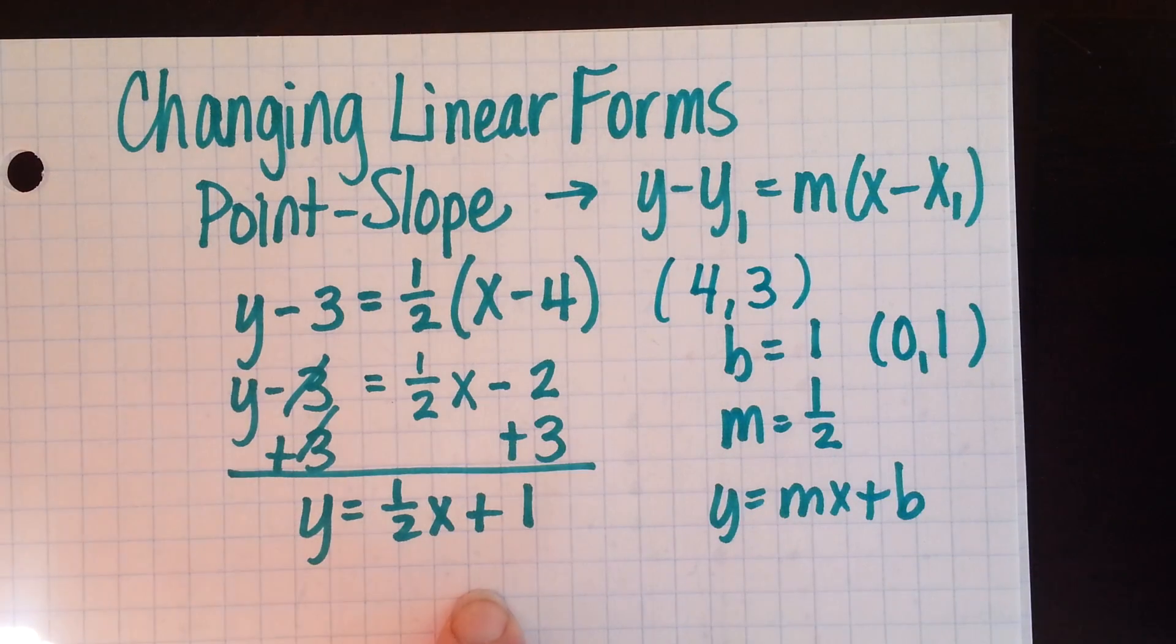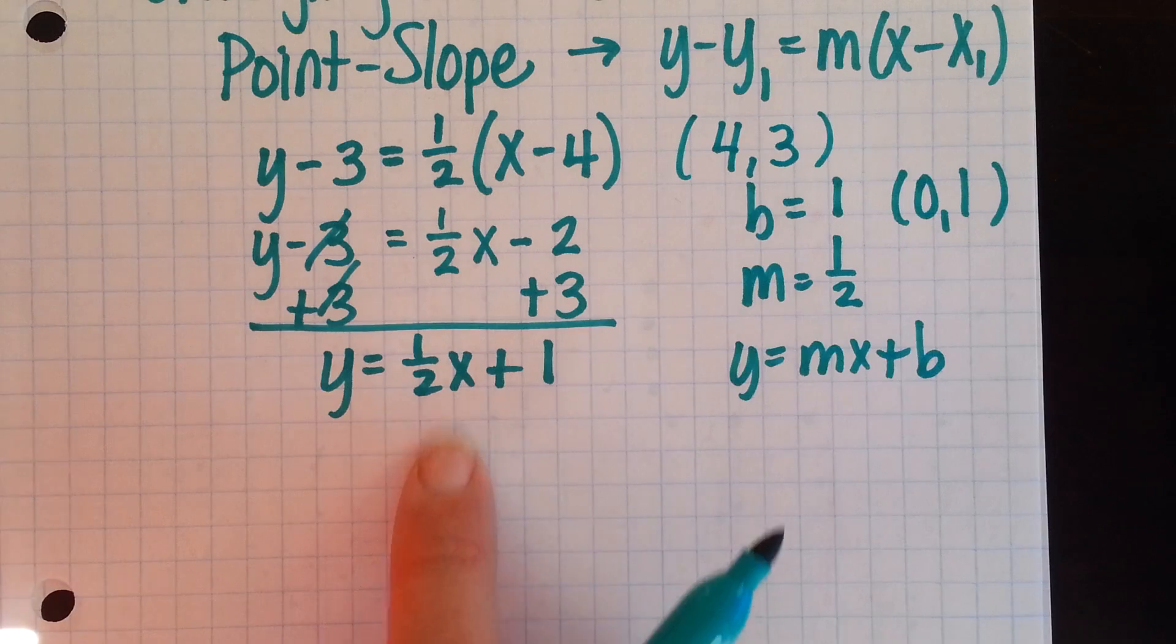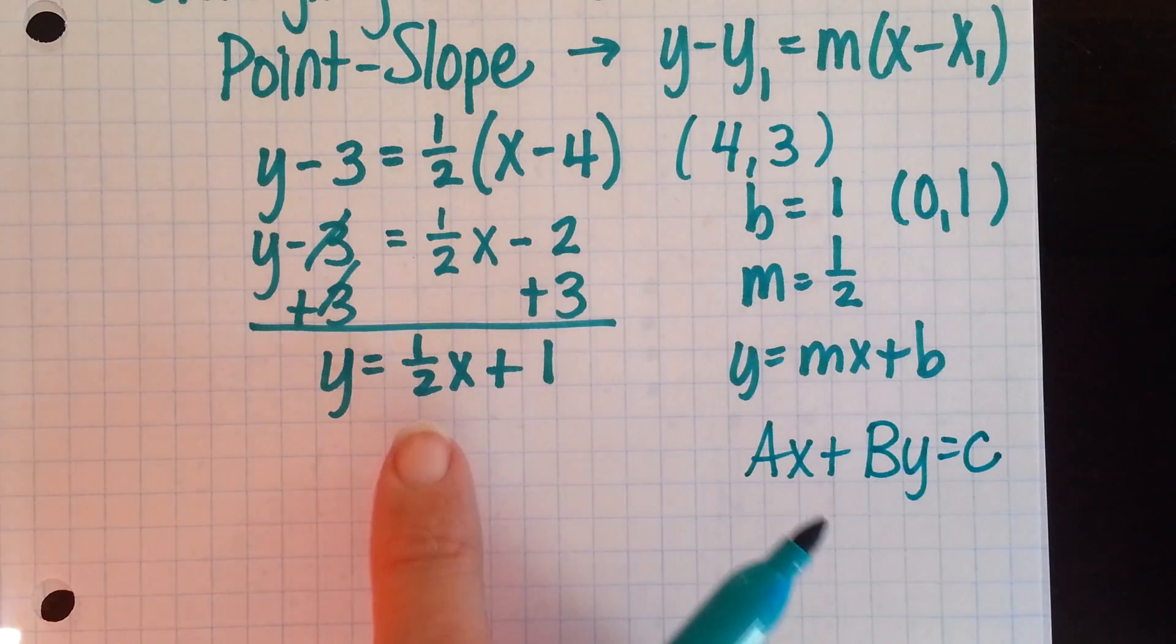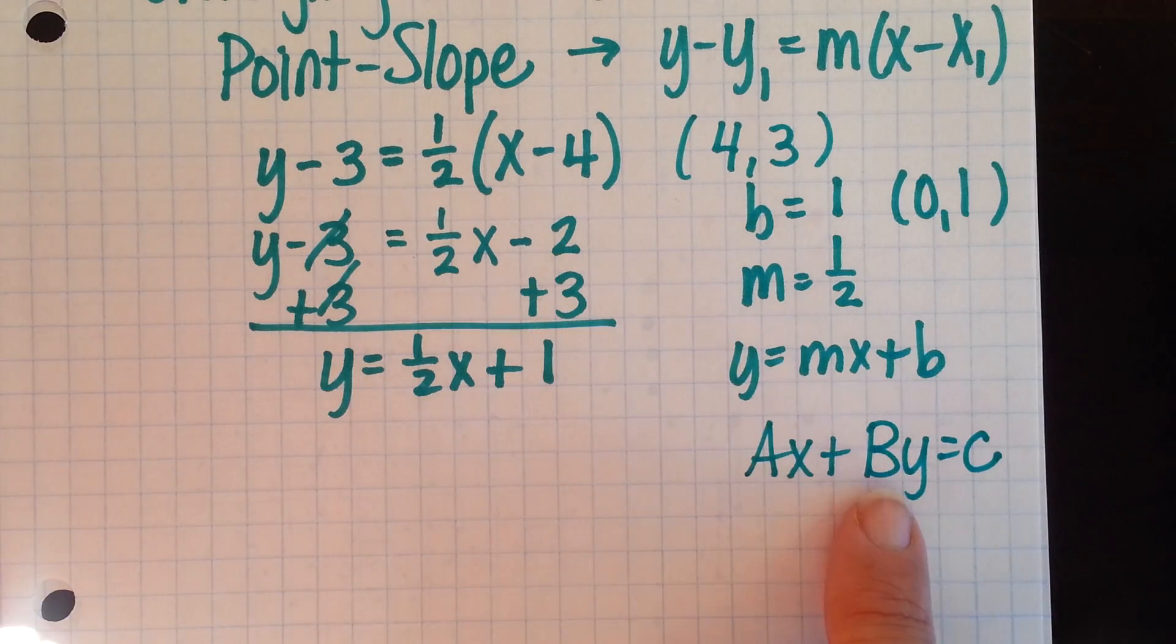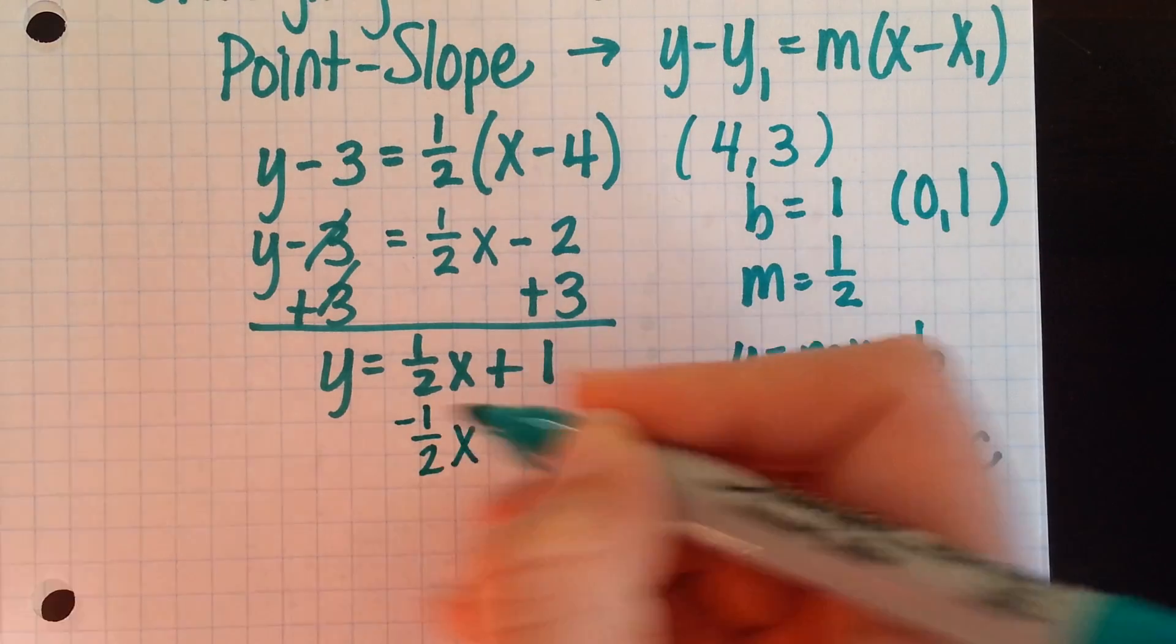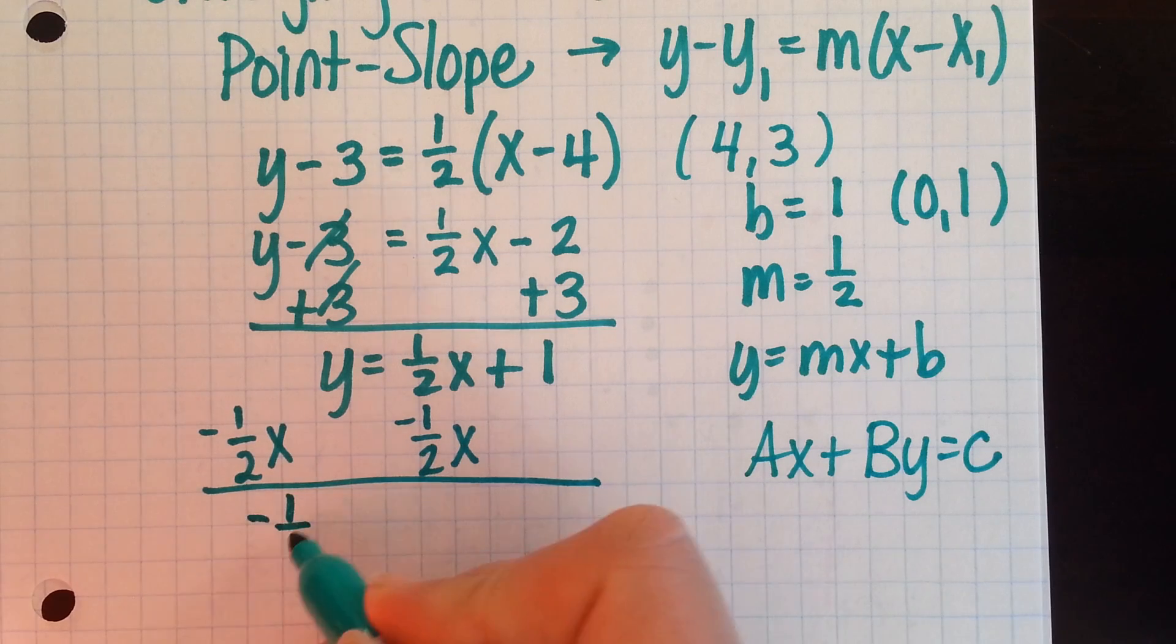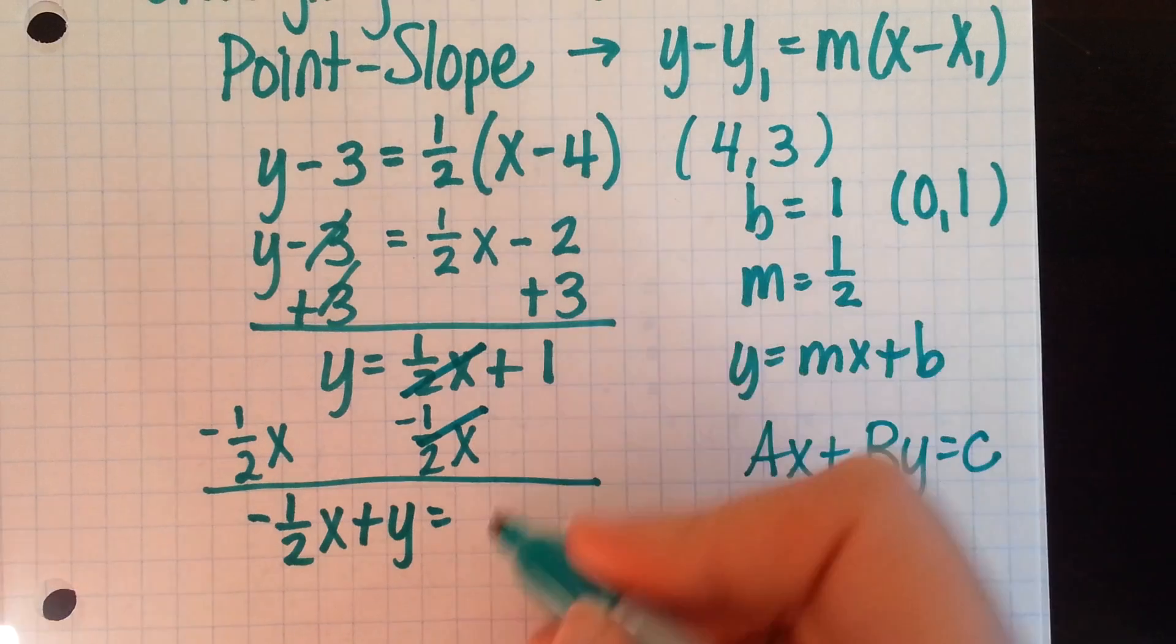Next, we can transform this slope-intercept form into standard form by just taking the x to the other side. Remember, standard form looks like Ax plus By equals C. So we want to move the x over, so we have our x and our y on the same side. So we're going to subtract 1 half x from both sides. Over on the left side, that leaves negative 1 half x plus y equals 1.